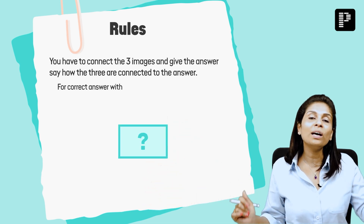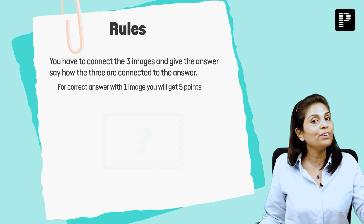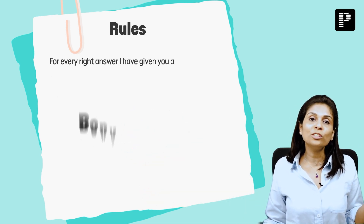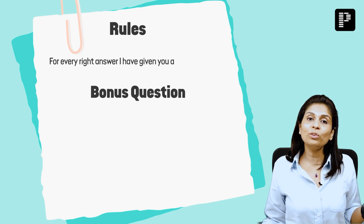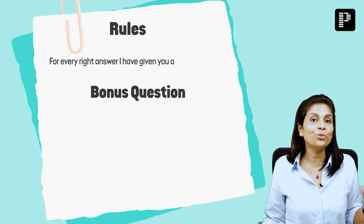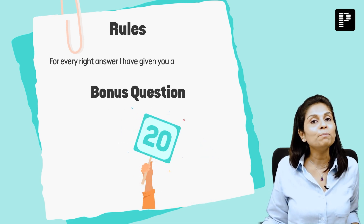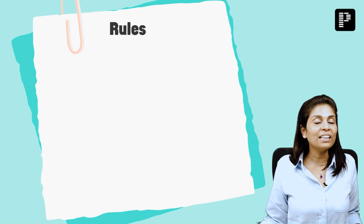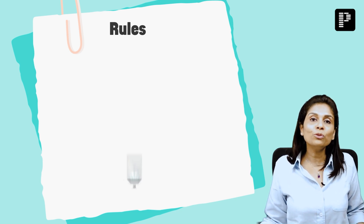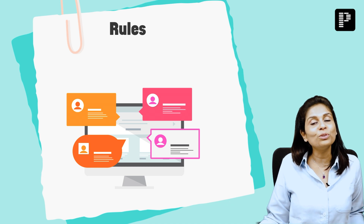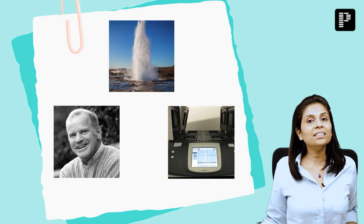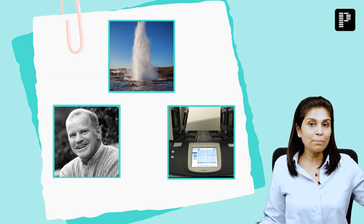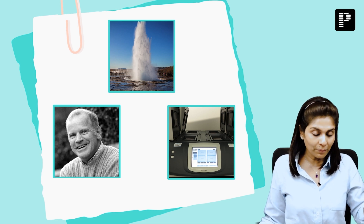If you can connect only two images, you get 10 points. If you can connect only one image, you get 5 points. For every right answer there is also a bonus question — if you get the bonus question right, you get an additional 20 points. At the end of the video, don't forget to type your total score in the comment section. Give yourself 45 seconds and then come back to know the right answer.